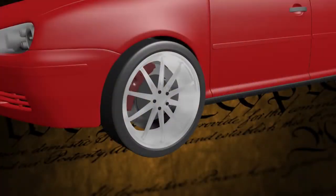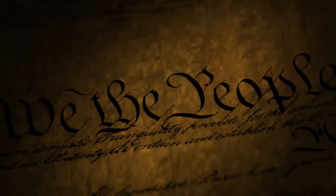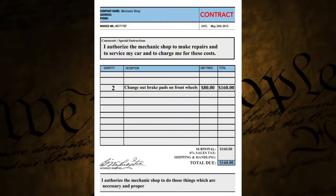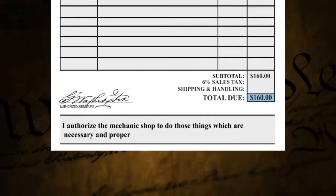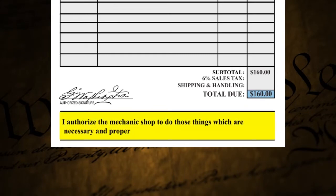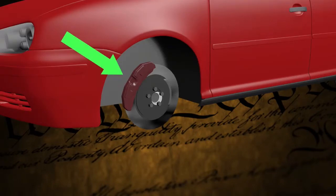You stick around and watch through the bay windows, and you see them taking the wheel off your car. You whip out your contract and say, 'I only authorize you to change out my brake pads.' He says, 'Let's look at the bottom — it says I authorize the mechanic shop to do those things which are necessary and proper. If I'm going to change your brake pads, I've got to take your wheel off. It's necessary and proper.' And you sheepishly walk out — okay, that makes sense.